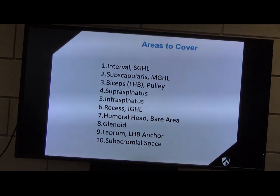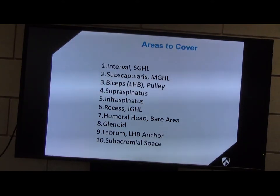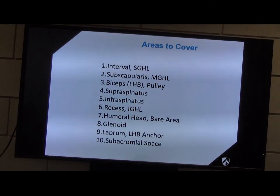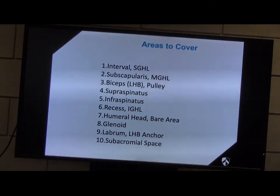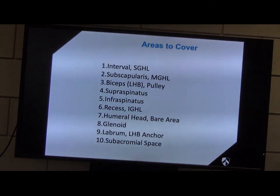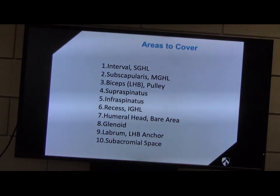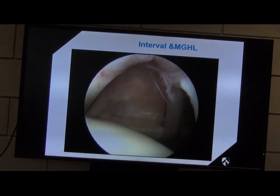These are the things we're going to look at in the rotator interval: the coracohumeral ligament, subscapularis and its attachments, biceps and its pulley, supraspinatus, infraspinatus, inferior recess, humeral head and the bare area, glenoid, labrum, and subacromial space. You just go through that in a sequential manner when you do your arthroscopy.